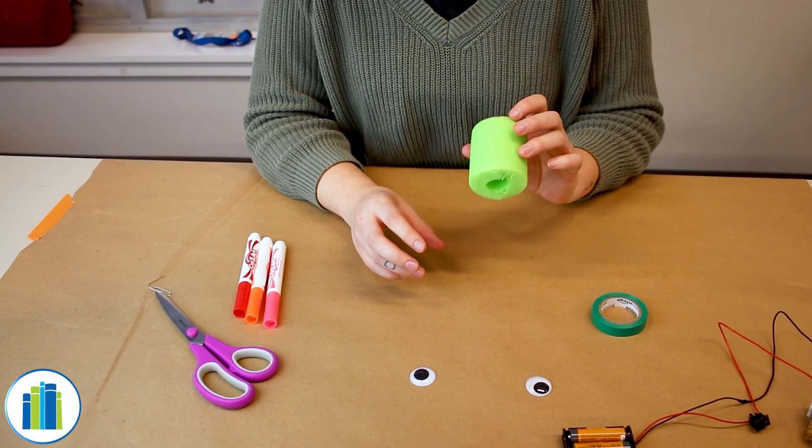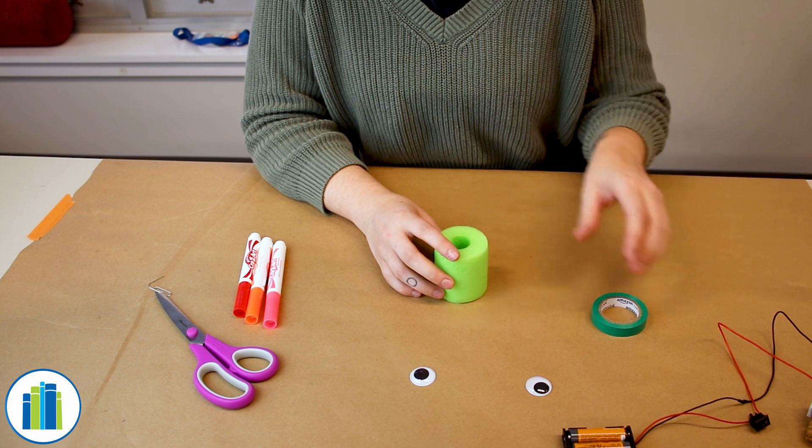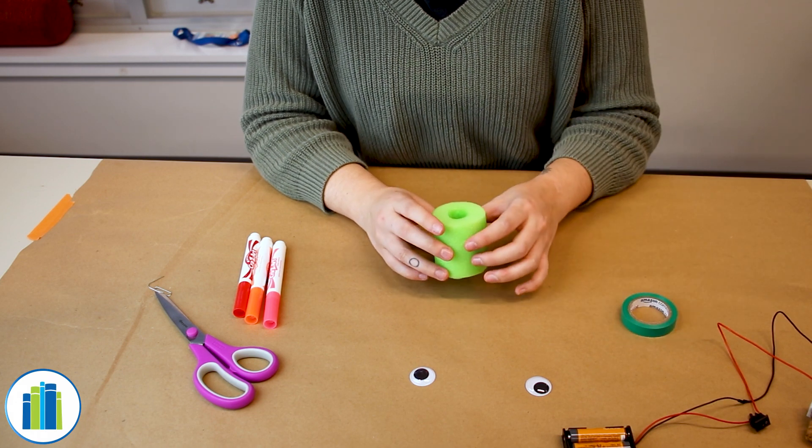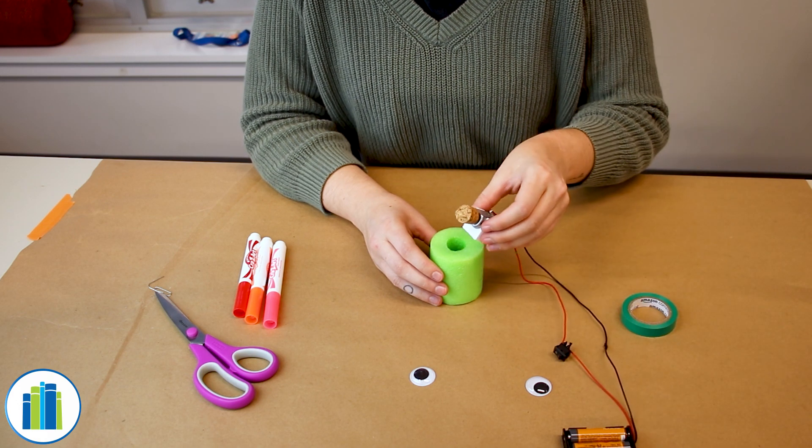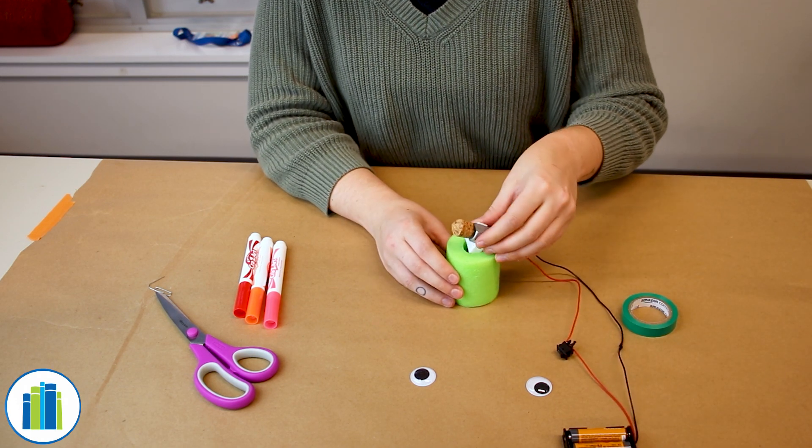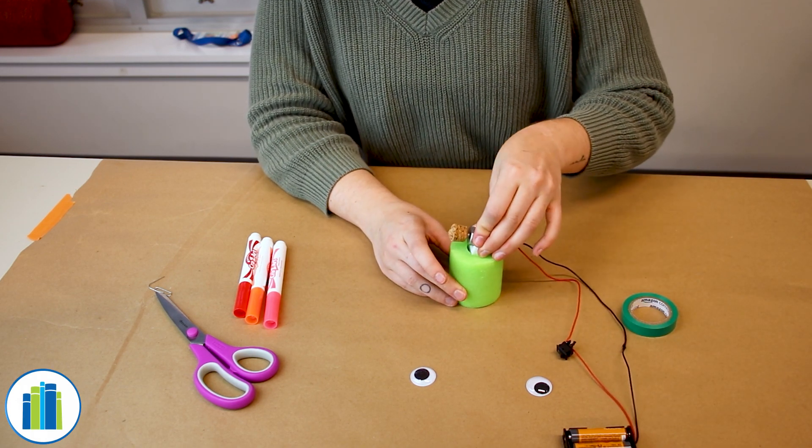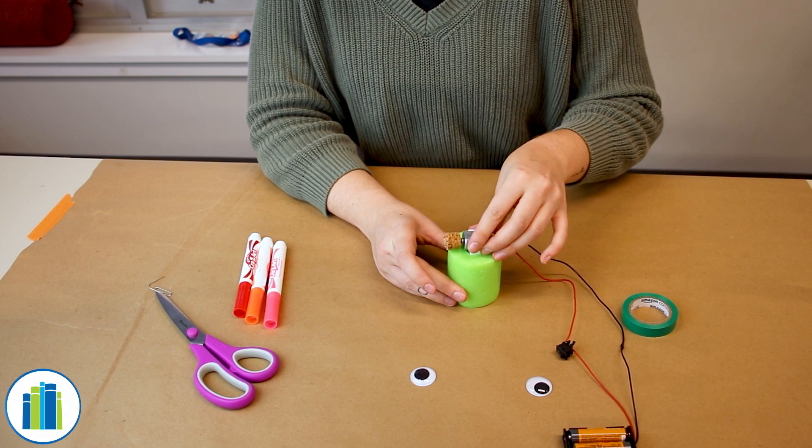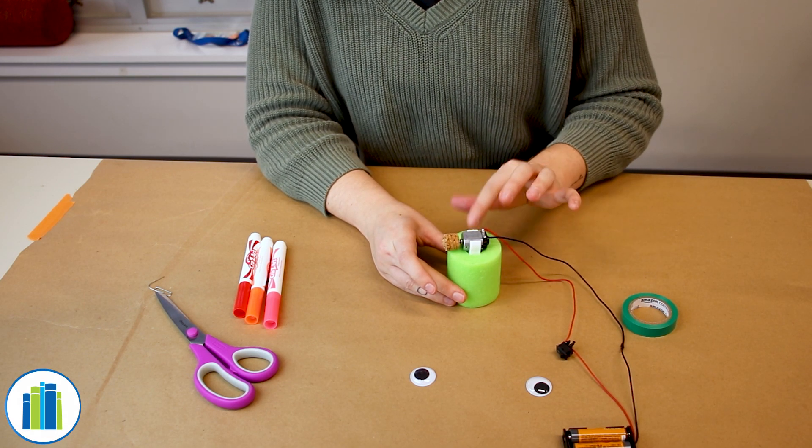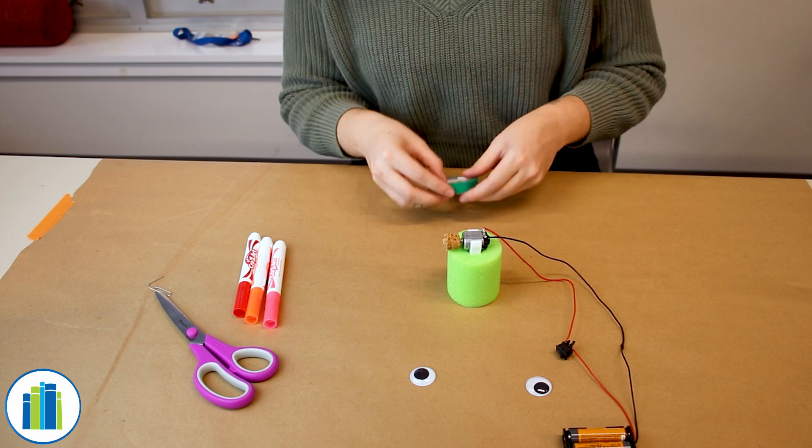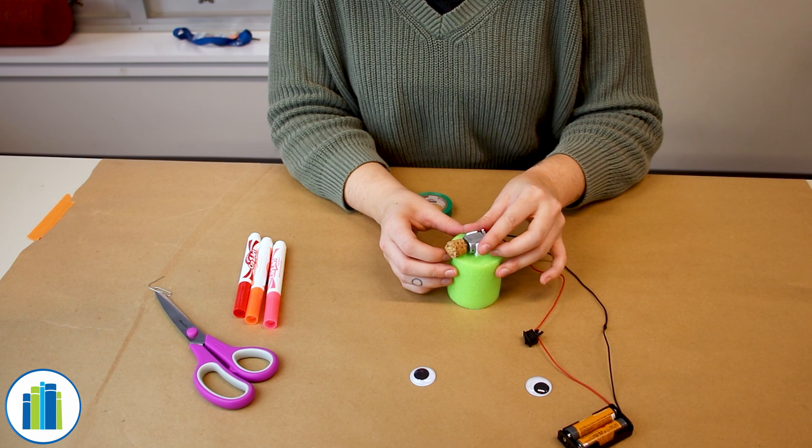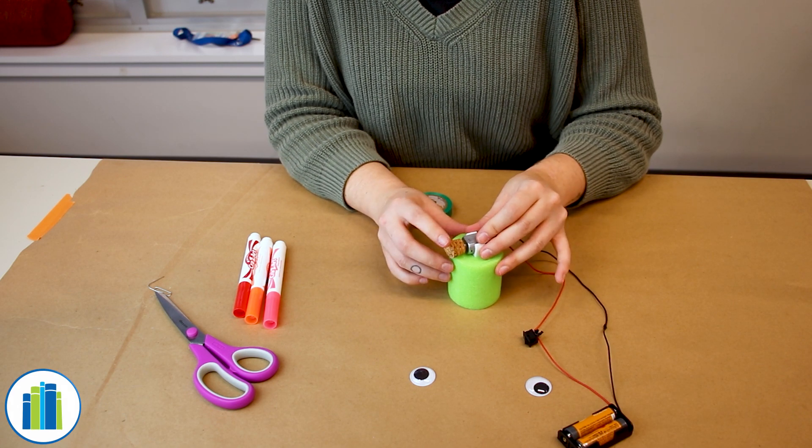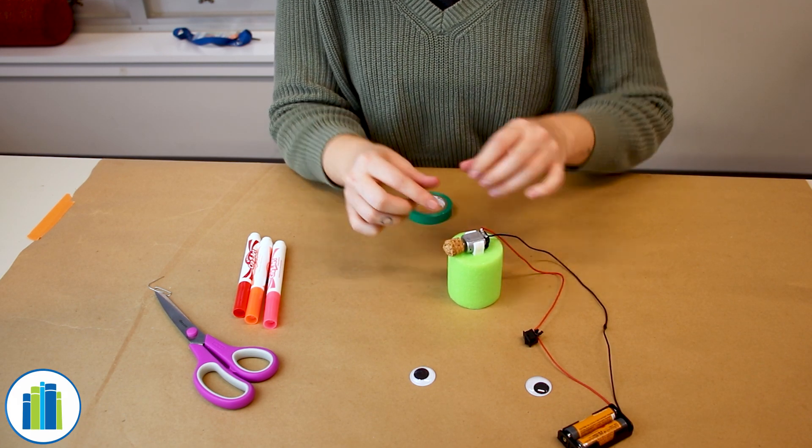Now we're going to grab the pool noodle. So with the pool noodle, this is going to be the body of our robot. So grab your motor again and then you're going to stick the white part of the motor inside of the center of the pool noodle.